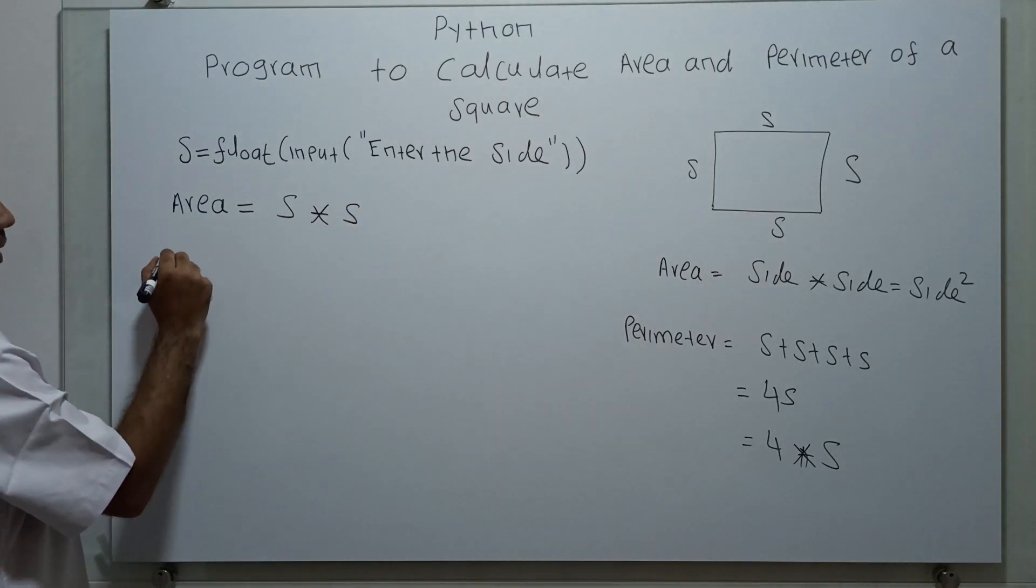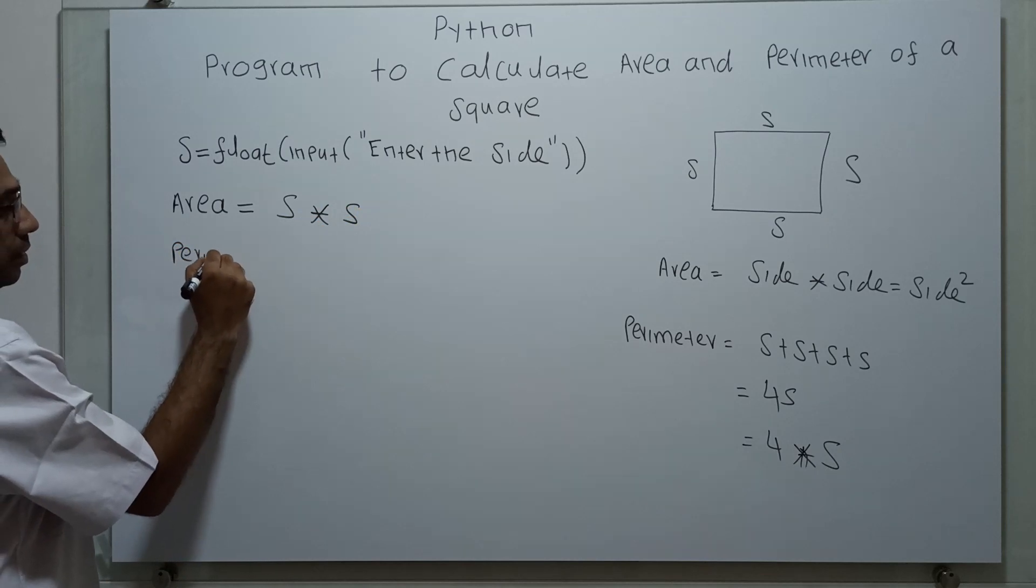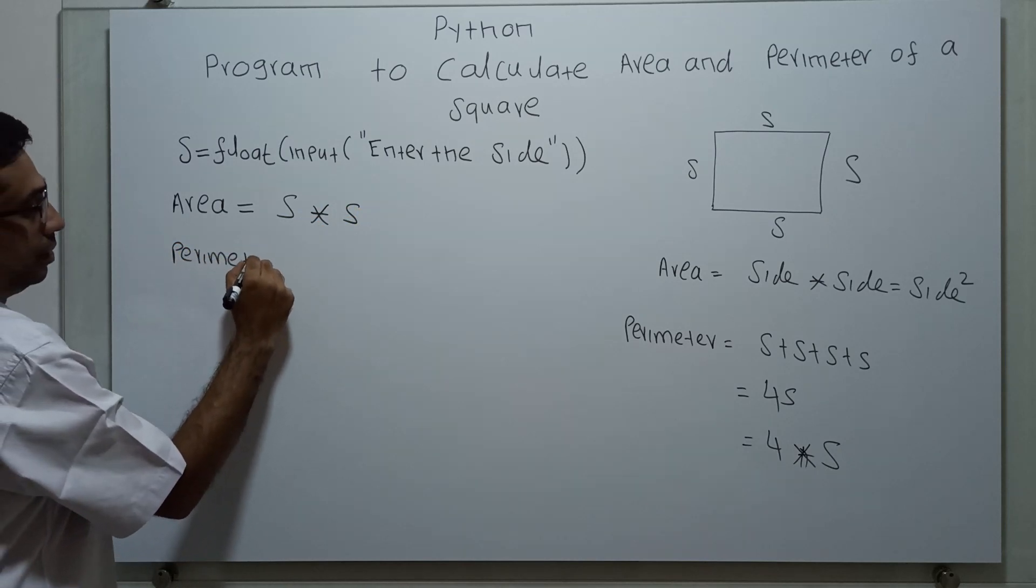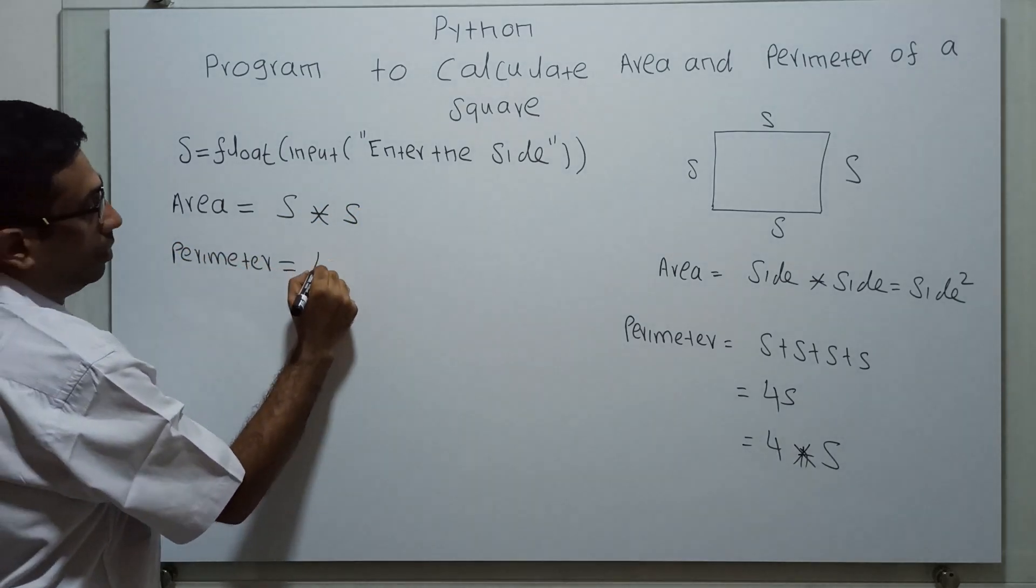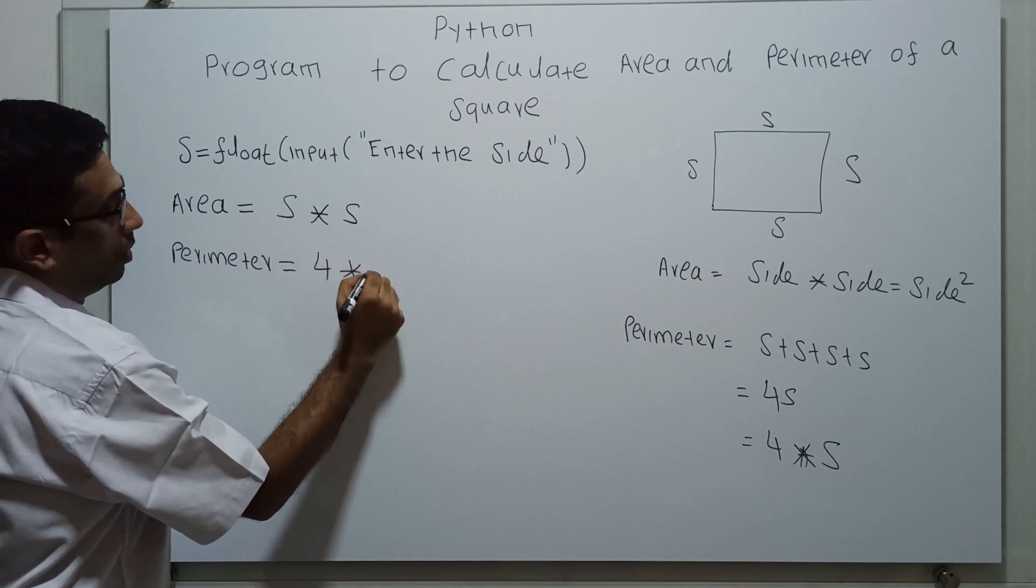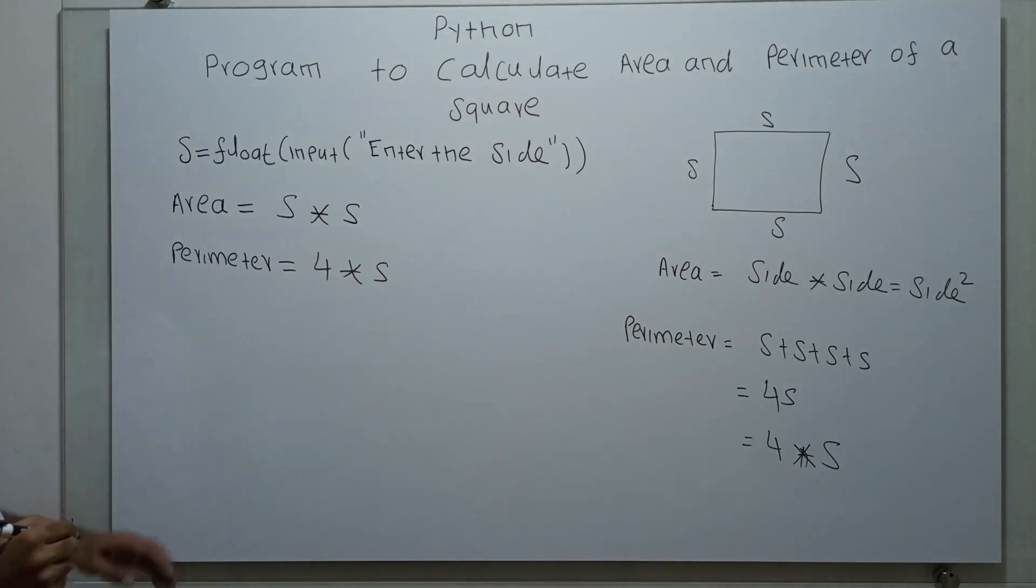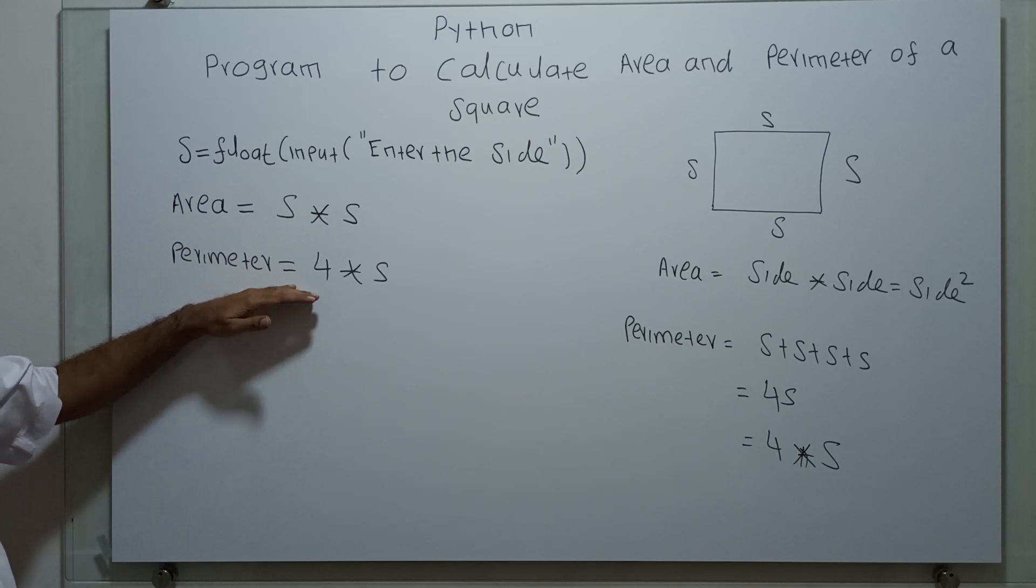Next, I am going to calculate the perimeter. Perimeter equals 4 into S. So I have calculated the area and perimeter.